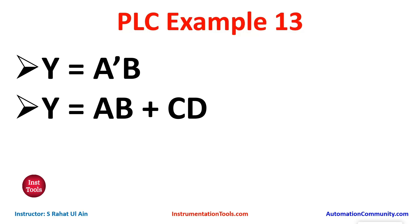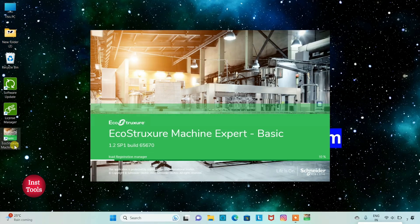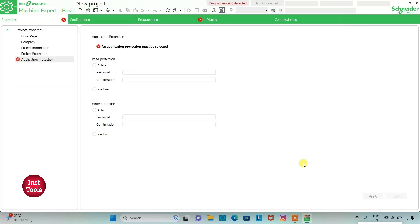For Y equals A̅B, we will use a normally closed contact for A and connect that with B in series, thus implementing an AND gate. Let's move to EcoStructure Machine Expert where we will draw the ladder diagram. I will open EcoStructure Machine Expert.